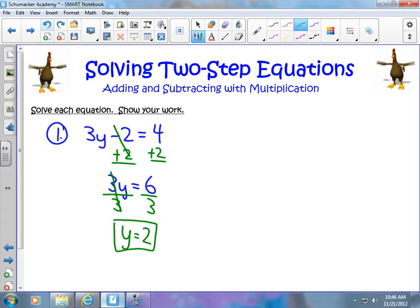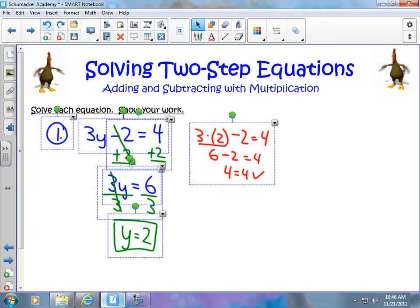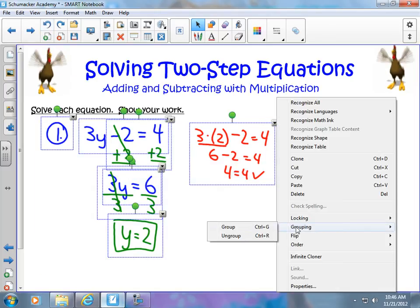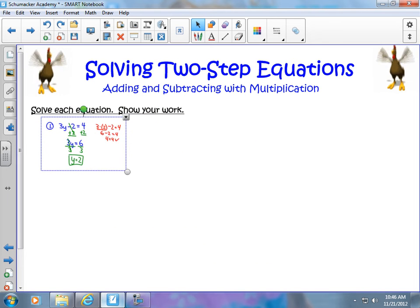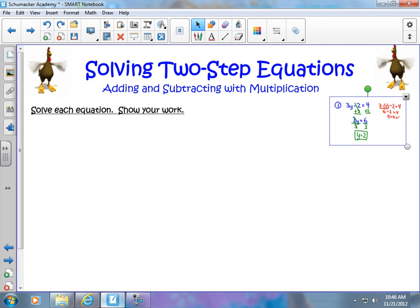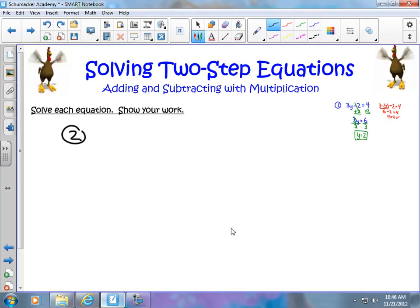Now again, I can check my answer by plugging in the values. I will do 3 times my value of 2 minus 2 equals 4. And so I end up having 6 minus 2 equals 4. 4 equals 4. It checks out. I am correct. It is very important to check your work when you're doing multi-step equations. You can tell with any equation if your answer is correct just by checking it, plugging in the values. So it seems like a very easy way to make sure that our answer is correct.